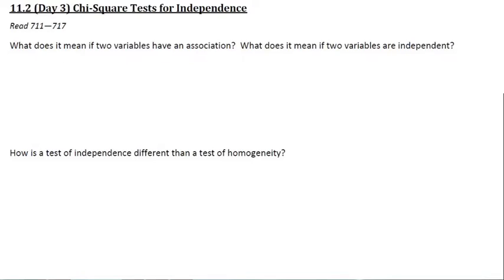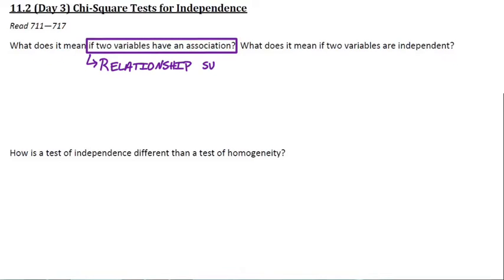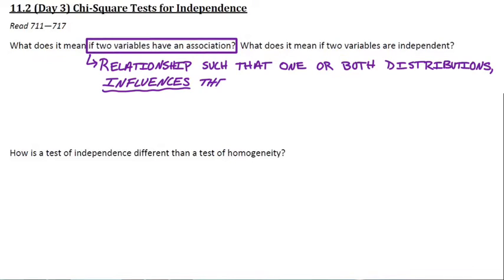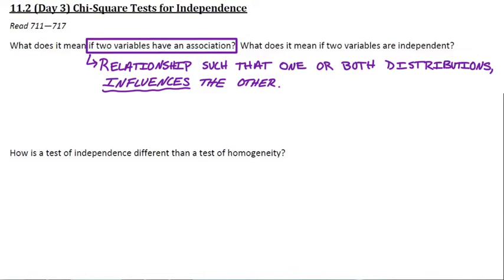Let's talk about independence and what it means to have an association. If two variables have an association — in other words, if they're not independent — that means one or both distributions influences the other. For chi-square tests, we're talking about distributions of categorical data. If two variables have an association, they're not independent because they actually influence each other.